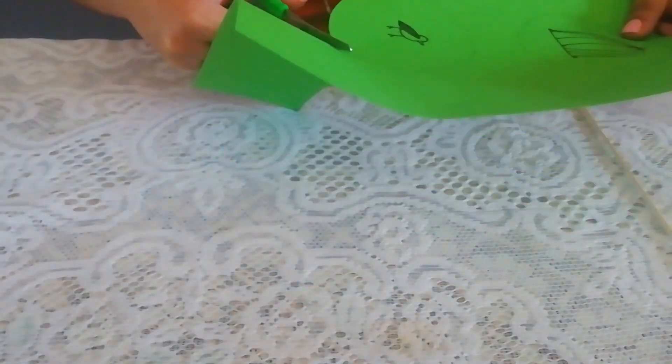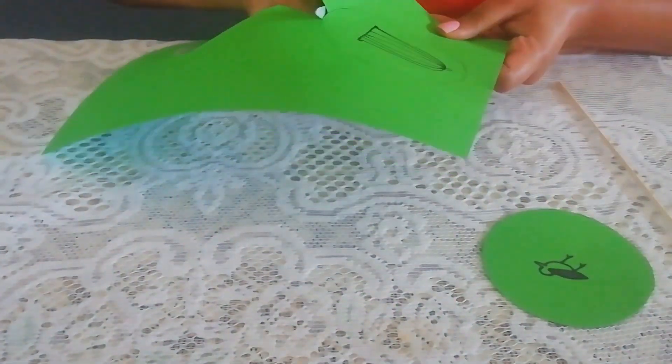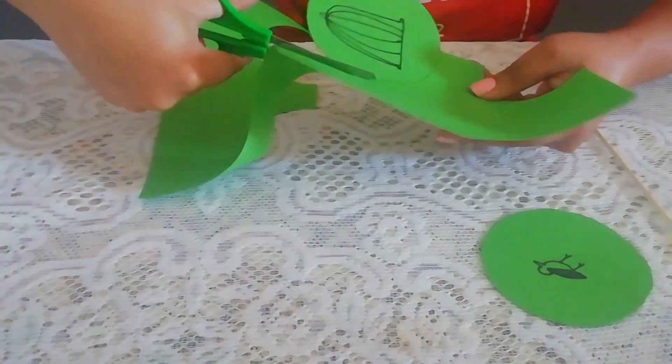Once you've finished drawing, cut out both circles. Then place the two circles alongside one another right side up.